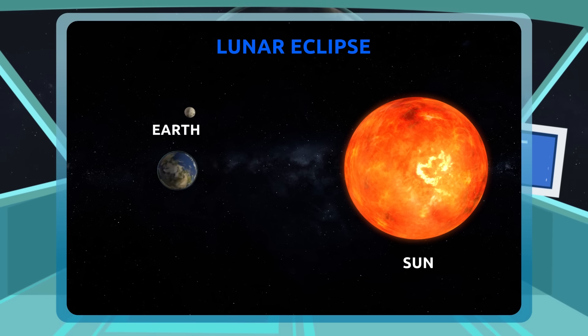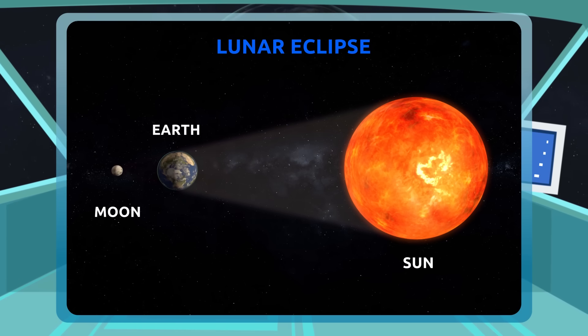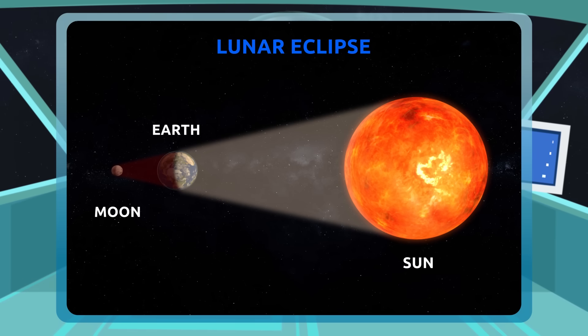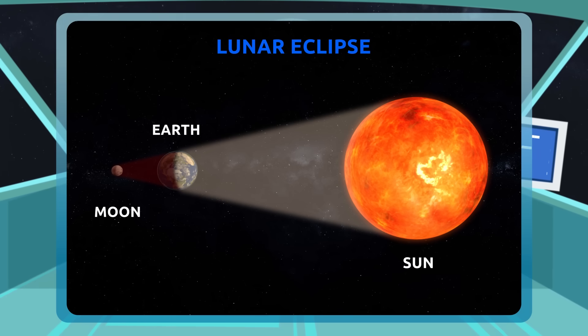Lunar eclipses happen when the Earth comes between the Sun and the Moon, forming a shadow that covers the lunar surface, changing the color of the Moon to copper red.